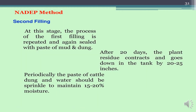Afterwards, the second filling step is followed. The process of the first filling is repeated and again sealed with a paste of mud and dung. After 20 days, the plant residue contracts and goes down in the tank by 20 to 25 inches. Periodically, a paste of cattle dung and water should be sprinkled to maintain 50 to 60% moisture.